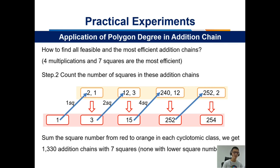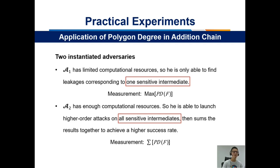We assume two types of adversaries. Adversary 1 has limited computational resources and is only able to find leakage corresponding to one sensitive intermediate; the measurement for this adversary is the maximum PD value. Adversary 2 has enough computational resources to launch a higher-order attack on all sensitive intermediates and sum the results to achieve a higher success rate; the measurement for this adversary is the sum of PD values.